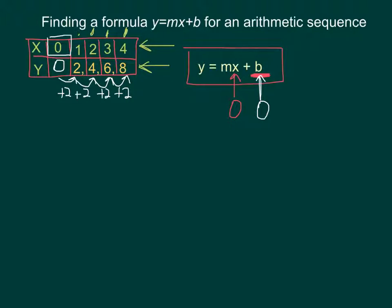Well, all I have to do is look at what I've been adding to every sequence. And the answer is, I'm adding 2. So my formula for 2, 4, 6, 8 is y equals 2x plus 0, or y equals 2x.